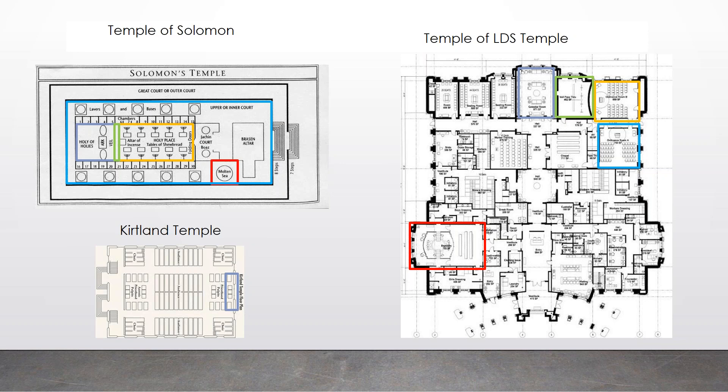I made some colored blocks that represent different parts of Solomon's Temple: in red we have the molten sea, in orange we have the inside of the temple where the showbread and menorahs are and the altar of incense, then we have a veil, and then we have the Holy of Holies.